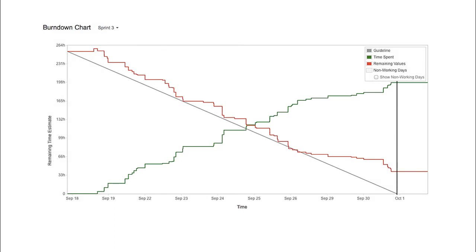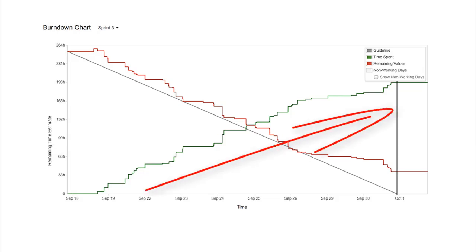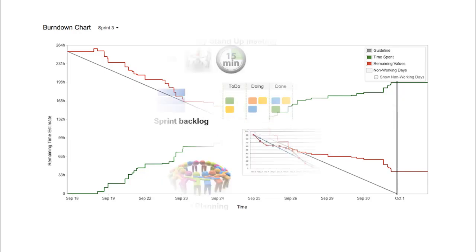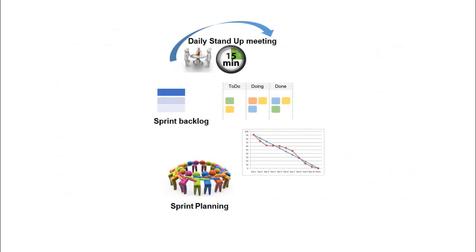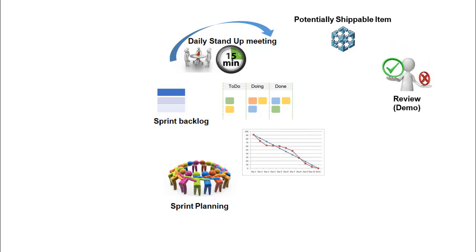Now, similar to the burndown chart, there is a concept of a burn up chart as well. While the burndown chart plots the remaining task hours, the burn up chart plots the completed task efforts. Thus on the last day of the sprint, potentially shippable items are ready for demo. The demo is followed by the sprint retrospective. In the next chapter I am going to discuss about these ceremonies. Thank you for watching. Please leave your feedback comments. You may subscribe the channel for future updates.